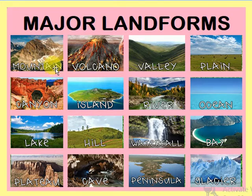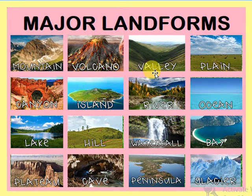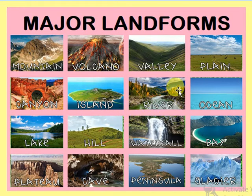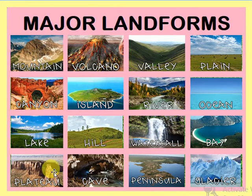Look at this image, which will help you identify some very common landforms: mountains, volcano, valley areas, the plains which are very fertile for agriculture, canyons — the great canyons you must have heard about — islands. Talking about India, there are two islands in our country: the Lakshadweep Islands and the Andaman and Nicobar Islands. Also rivers, oceans, lakes, hills, waterfalls, bays, plateaus, caves, peninsulas, and glaciers. These are some of the major landforms.